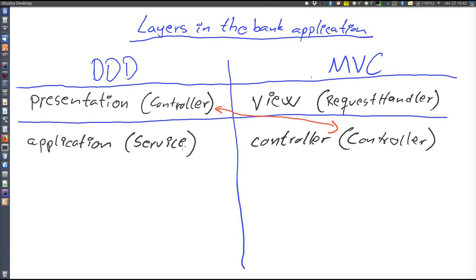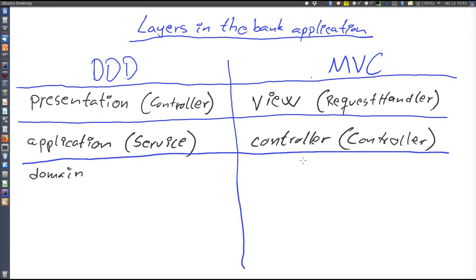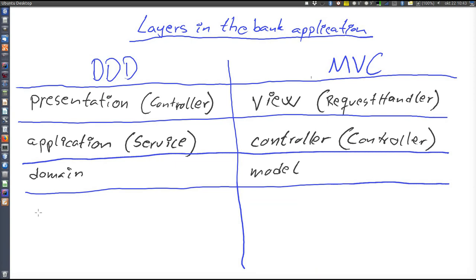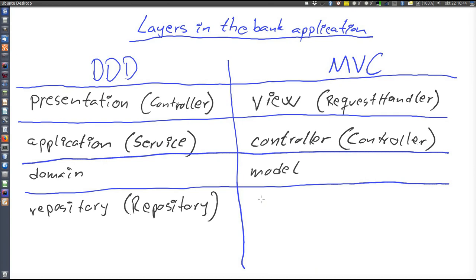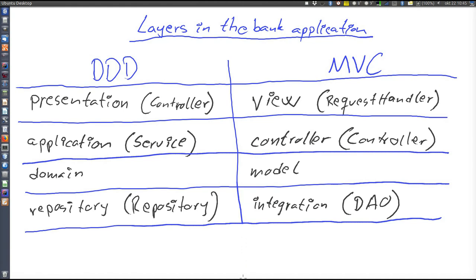In both cases a controller receives some kind of request, interprets it, and directs it to something that can perform the required task. Then follows the domain layer, which corresponds to the model layer — here there is no general name for classes; they have the name of the concept they represent, like account or account holder. Then we have the layer calling external resources like the database. In the sample application and in DDD it is often called repository, and classes are also called repositories. In MVC applications, especially Java EE, this layer is often called integration and classes are called DAOs — database access objects.